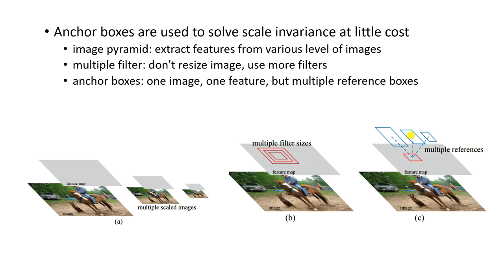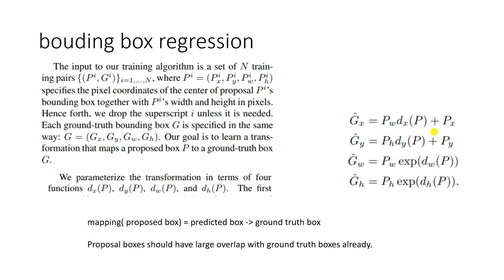Now we need to understand bounding box regression. The input is training pairs: a proposed box with center coordinates (x, y) and dimensions (w, h), and a ground truth box G. Our task is to estimate a mapping from our proposal to the ground truth. This mapping is expressed using a formula — sometimes taking exponentials or square roots for numerical reasons.